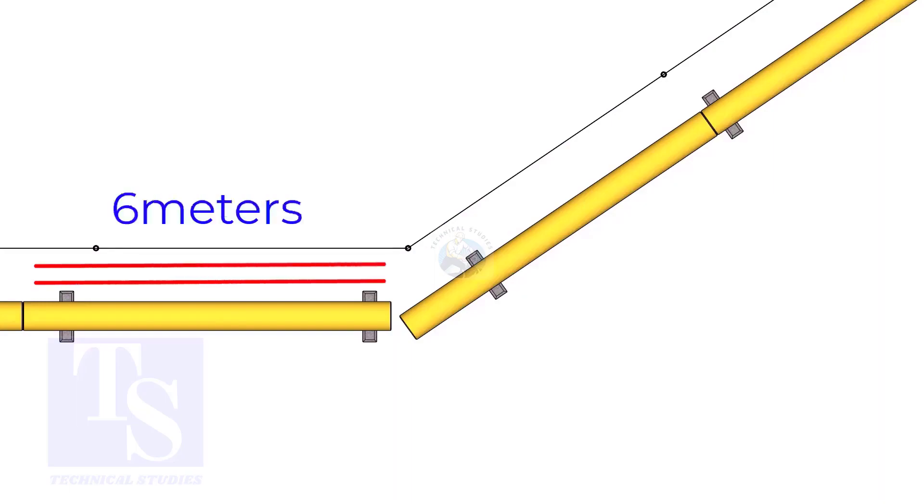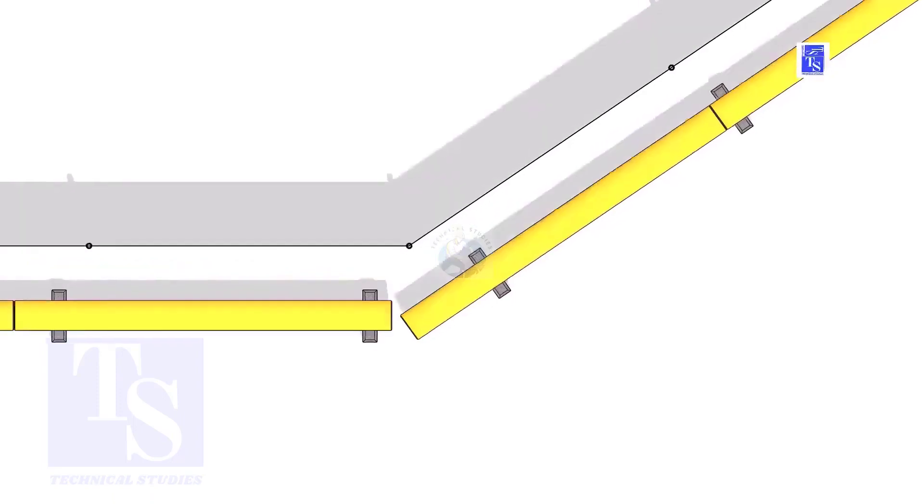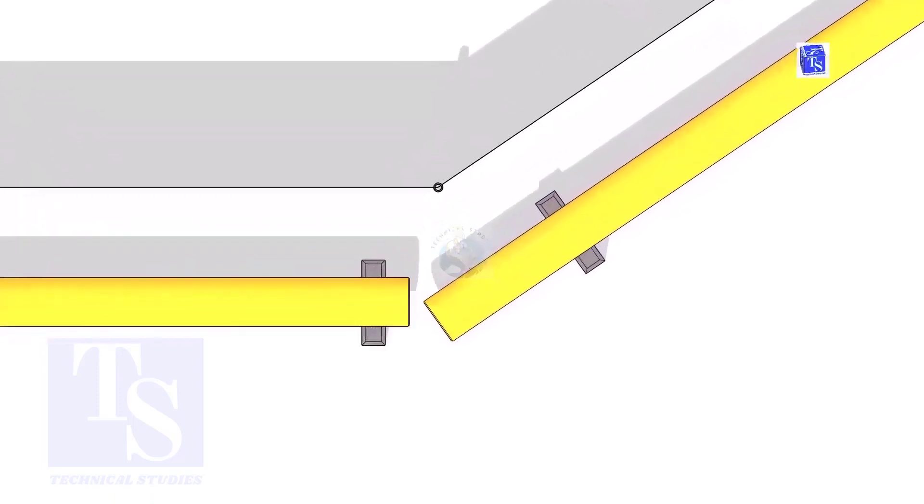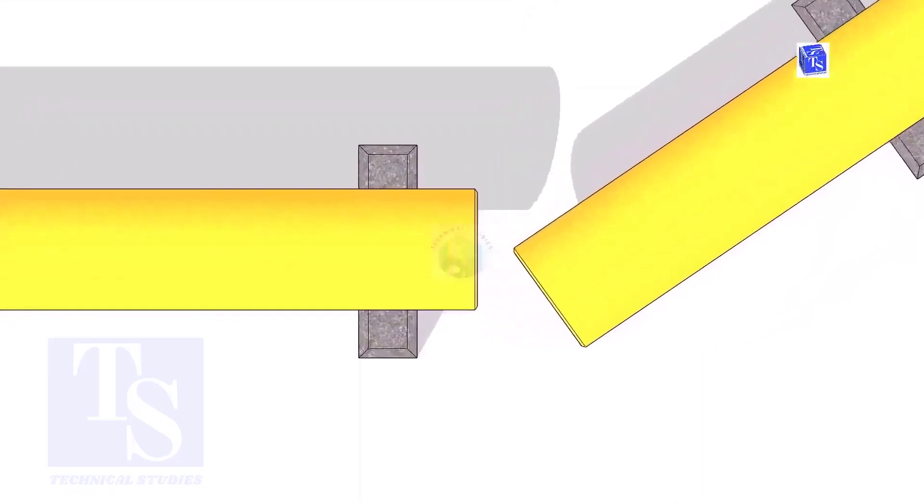The pipe shall be parallel to the fencing, not necessarily the entire length, but at least 6 meters on both sides. Not necessary that the center lines of both pipes are in a line.